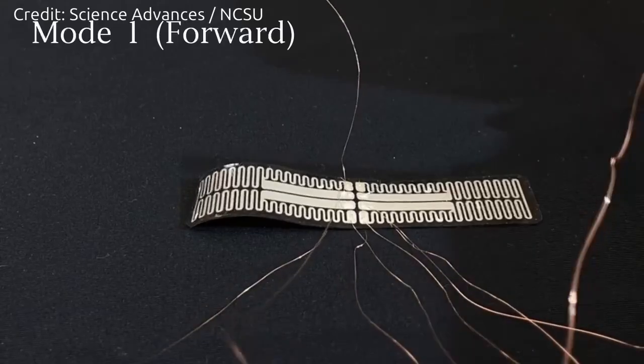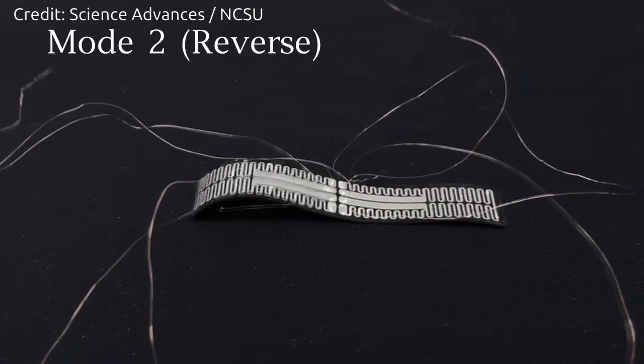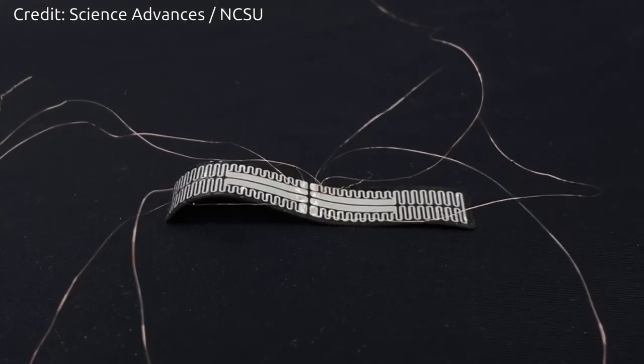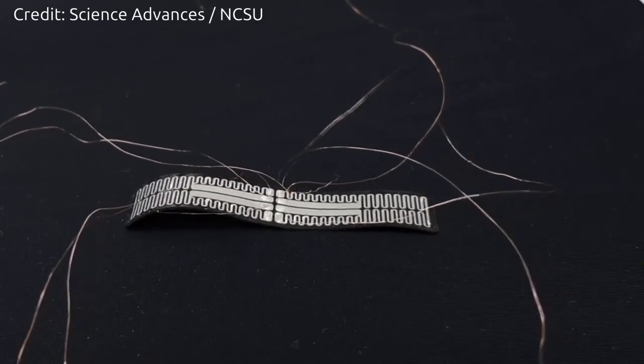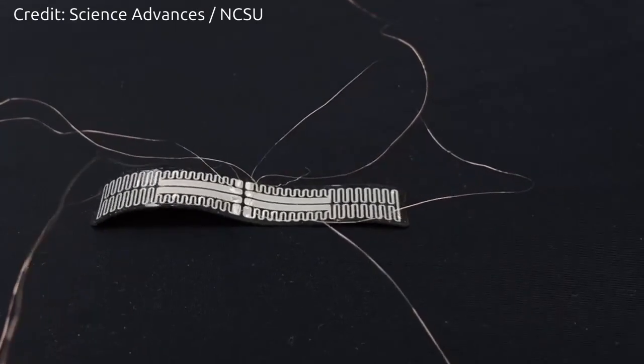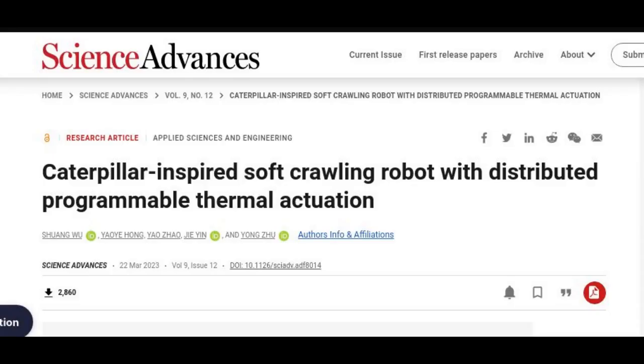They can control which sections of the robot bend by controlling the pattern of heating in the soft robot, and they can control the extent to which those sections bend by controlling the amount of heat being applied.